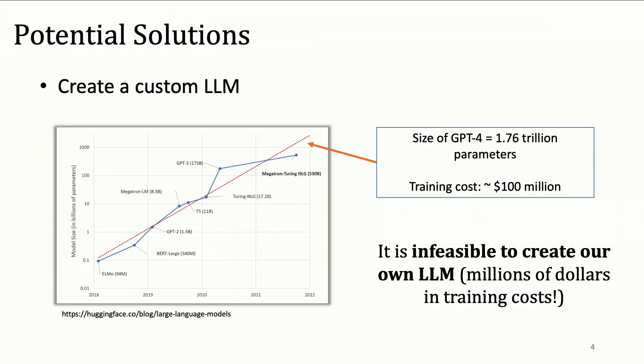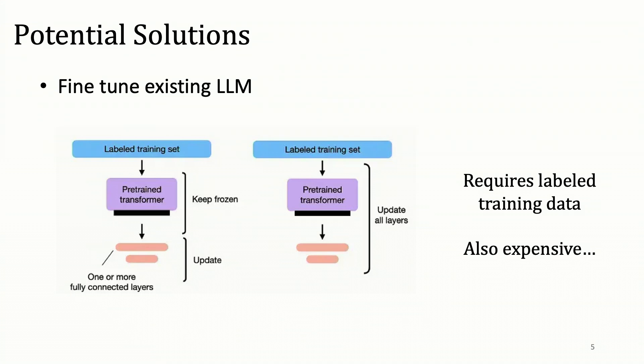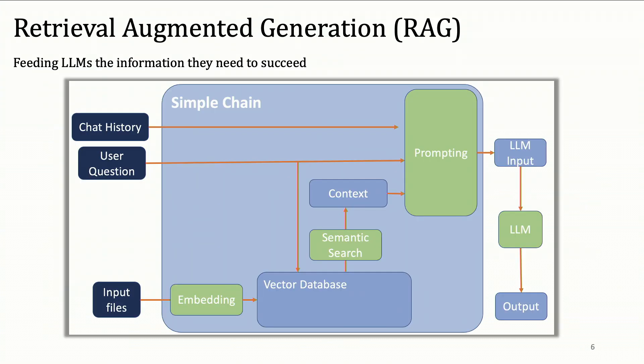How do we make a potential solution? Academia could create a custom large language model and framework, but as we've talked about, it's generally infeasible — it costs a lot of money and only the big tech giants are able to do this. There's also fine-tuning, however for many applications, fine-tuning requires a large amount of labeled training data, which in many STEM applications is really hard to generate and altogether just expensive. So fine-tuning seems to not be the solution here.